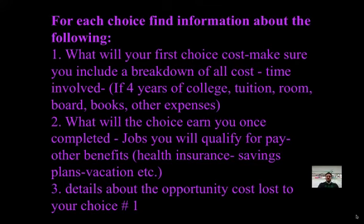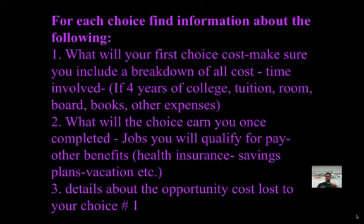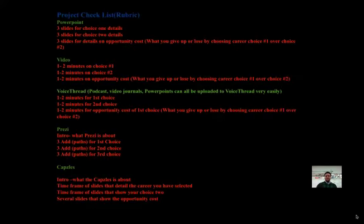Number three: details about the opportunity cost lost to choice one. Remember, two choices — you choose this one, this is your opportunity cost: what you can't do because you've done this one, what you give up, the choice not taken. This is what you do, this is what you don't do — this is opportunity cost.